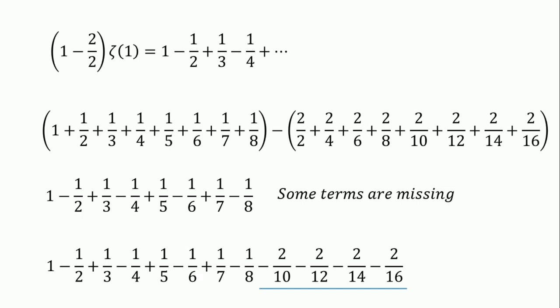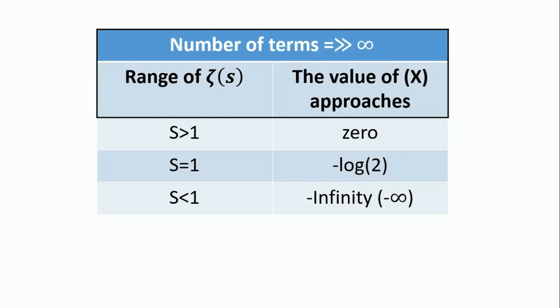So it's not a one-sided issue. There are conditions that allow the sum to approach 0 as we take more terms. Let's refer to the sum of the ignored terms as x — not just those four terms, but all ignored terms as the function goes to infinity. A table shows what x approaches in different ranges: when s is greater than 1, x approaches 0, which is why we get similar results before and after analytic continuation. When s equals 1, x approaches negative log 2. When s is less than 1, x approaches negative infinity.